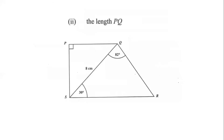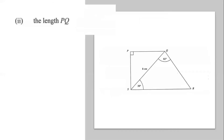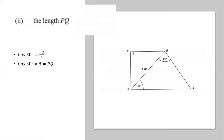Part two asks us to calculate the length of PQ. We use cos 30 degrees, since we calculated angle PQS to be 30 degrees. Cosine equals adjacent over hypotenuse — the side adjacent to 30 degrees is PQ, and the hypotenuse is still 8. So cos 30 multiplied by 8 gives us 0.866 multiplied by 8, which equals 6.93 centimeters. That is the length of PQ.